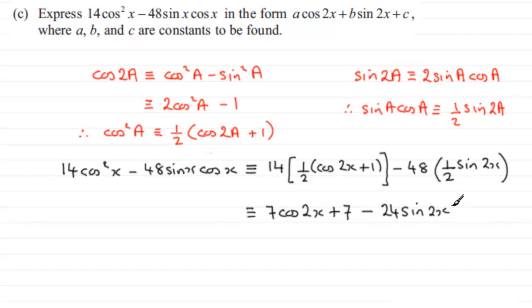And then if we just switch this around we can make it look like this. We can say that this is identical to 7cos2x and we've got the minus 24sin2x and then the plus 7. And this is now identical to what we've got to show. Something of the form acos2x + bsin2x plus a constant c.